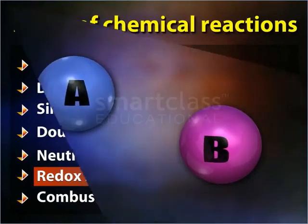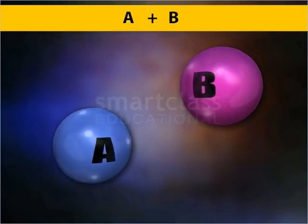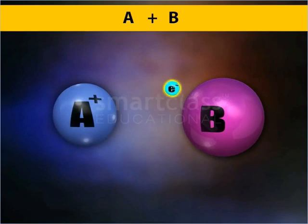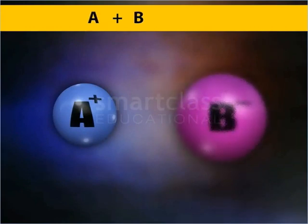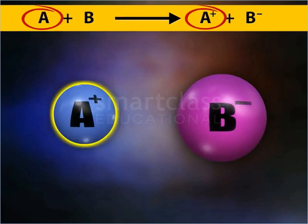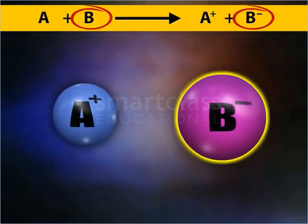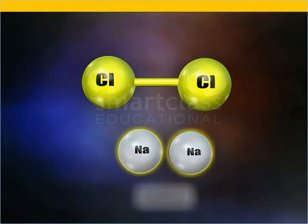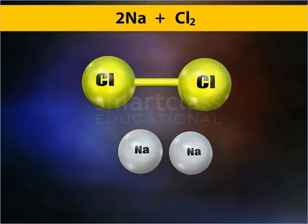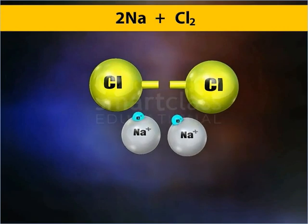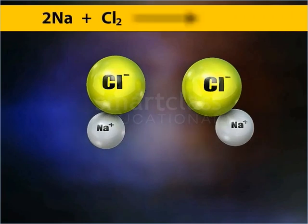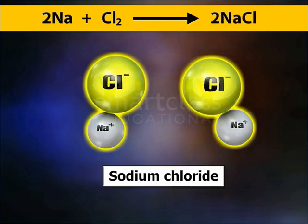Redox reactions are chemical reactions in which electrons are transferred between two chemical substances, resulting in the oxidation of one substance and reduction of the other. For example, in the reaction between sodium and chlorine, one electron is transferred from each sodium atom to each chlorine atom, resulting in the formation of sodium chloride.